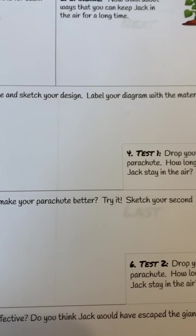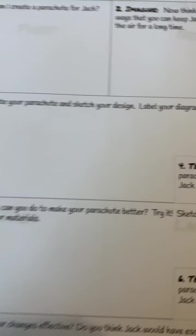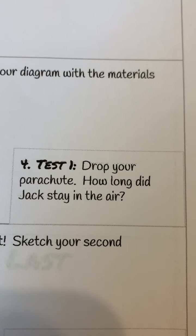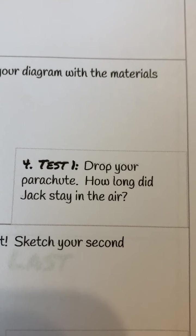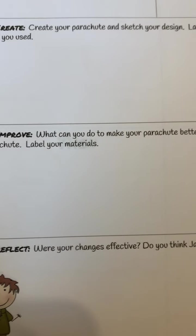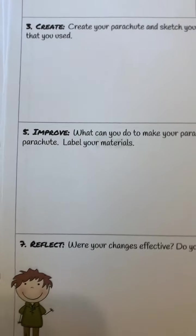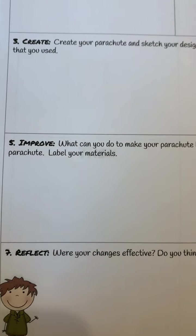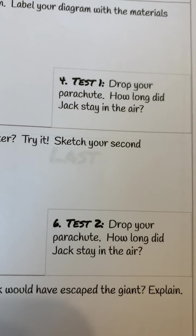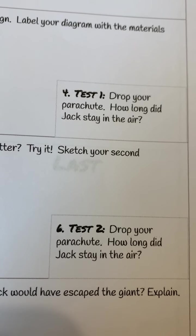Label your diagram with the materials that you used. Then, number four: Test One — drop your parachute. How long did Jack stay in the air? Number five: Improve — what can you do to make your parachute better? Try it, sketch your parachute, and label your materials. Number six: Test Two — drop your parachute again. How long did Jack stay in the air?